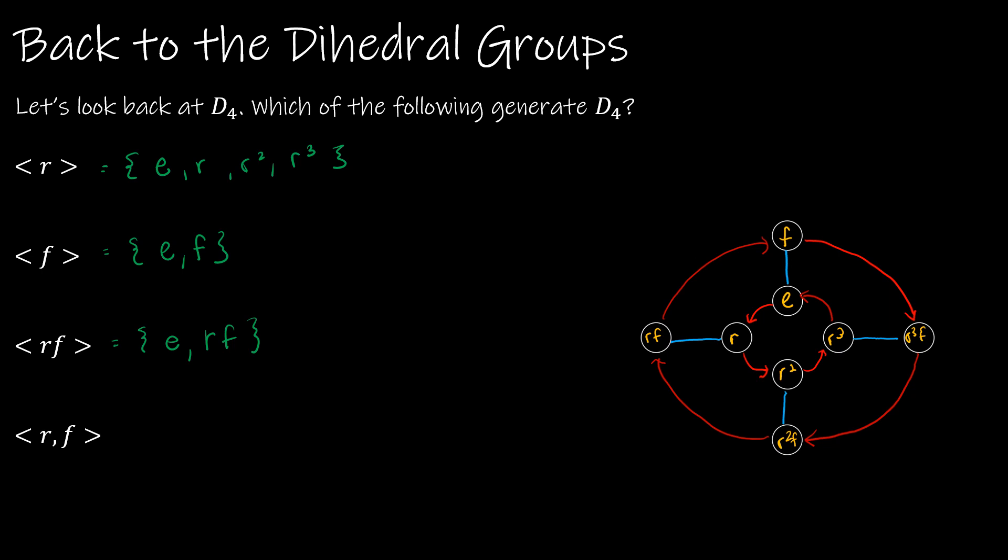Now, I want you to notice the difference in notation between RF and <R,F>. So if you have two elements, what we're saying is it's whatever's generated here and whatever's generated here and anything that you can generate with them together. So obviously, I already know that I can get E, R, R squared, R cubed. But with F, I can also get E, F which is F, RF which is RF, R squared F, R cubed F.